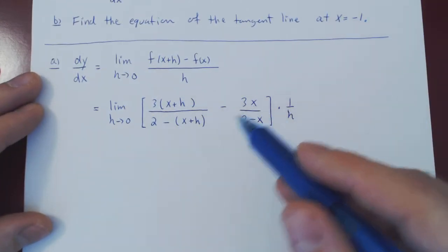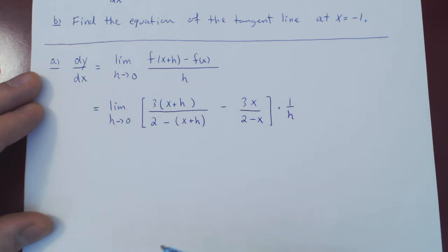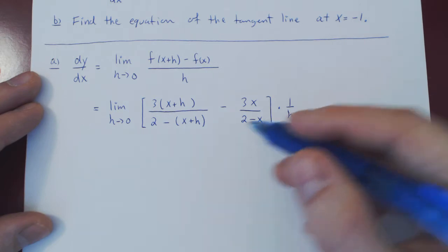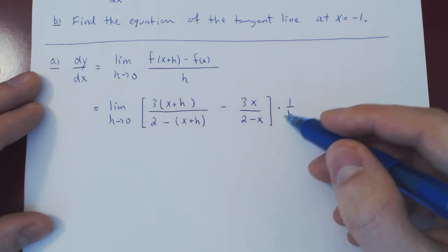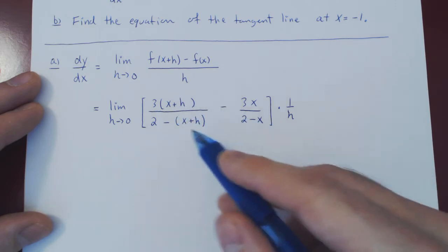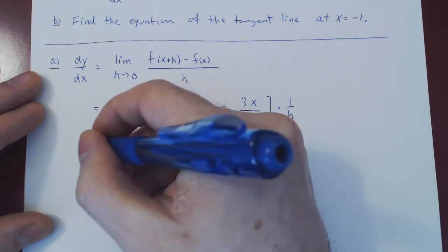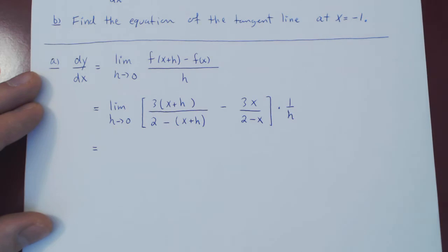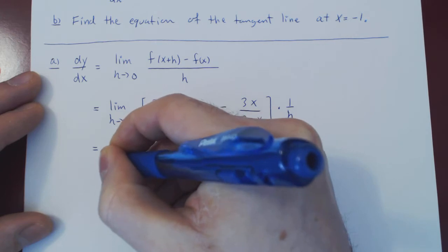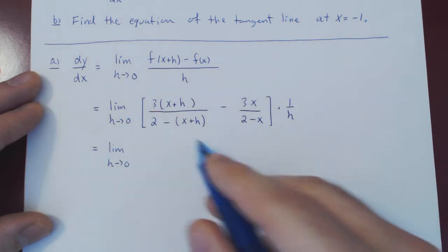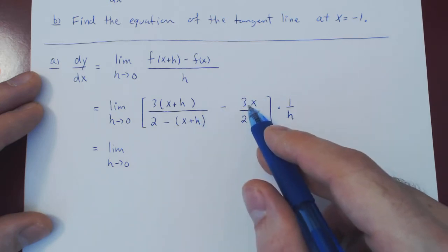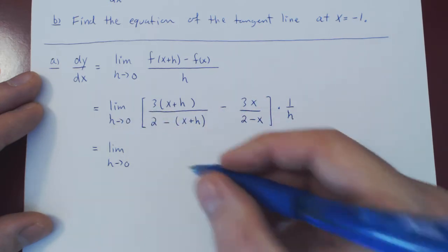We want to simplify the expression so then we can let h approach zero. We have a difference of two fractions. As one over h gives us a one over zero case, we have to find a way to cancel h. The only thing we can do here is try and go for a common denominator by cross-multiplying. But first, we'll simplify our life a little bit — if you notice, three multiplies the first fraction and the second fraction, so we can pull out three as a common factor.